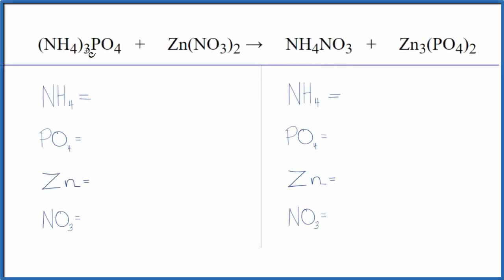In this video we'll balance the equation for ammonium phosphate plus zinc nitrate. This is a double displacement reaction where the zinc and the ammonium ions switch places.